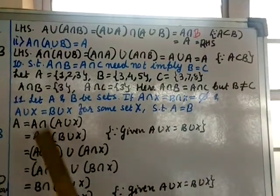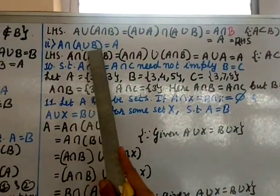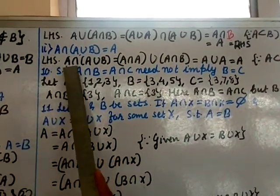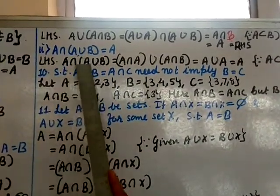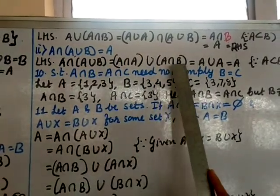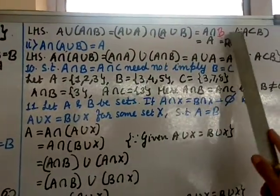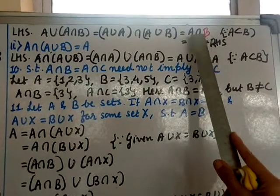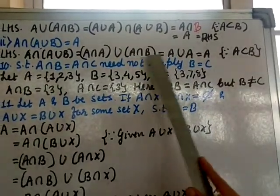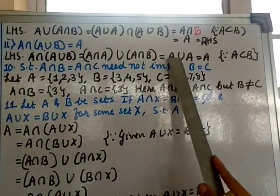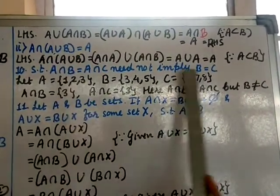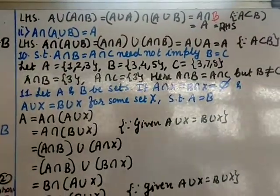For part (2), expand A ∩ (A ∪ B) = (A ∩ A) ∪ (A ∩ B) = A ∪ (A ∩ B). Since A ∩ B ⊆ A, we have A ∪ (A ∩ B) = A. Hence proved.